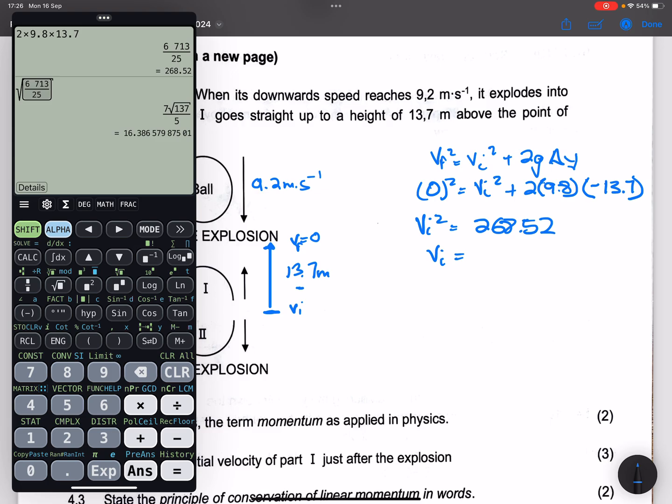So vi² will be 268.52, so to find the initial velocity, we take the square root of the answer. So our square root is 16.39.